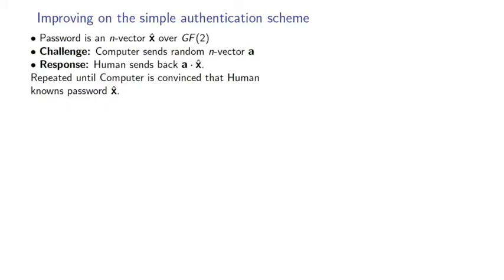So the computer sends a random n vector, a, and the human sends back the dot product of a with the password, x hat. And this is repeated until the computer is convinced that the human knows the password.